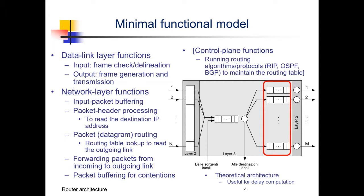At the output there is another buffering point for contention resolution. Packets stored in these output buffers wait to be transmitted out of the physical output interface. Other components used for management of control-plane and management-plane protocols are not included in this minimal functional model, just to simplify the analysis.